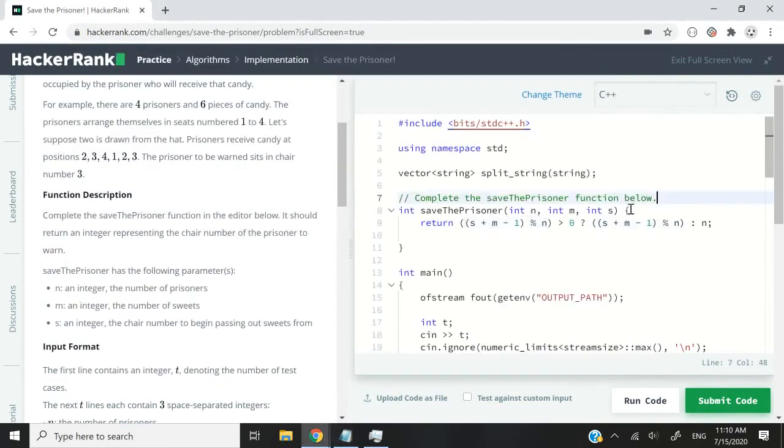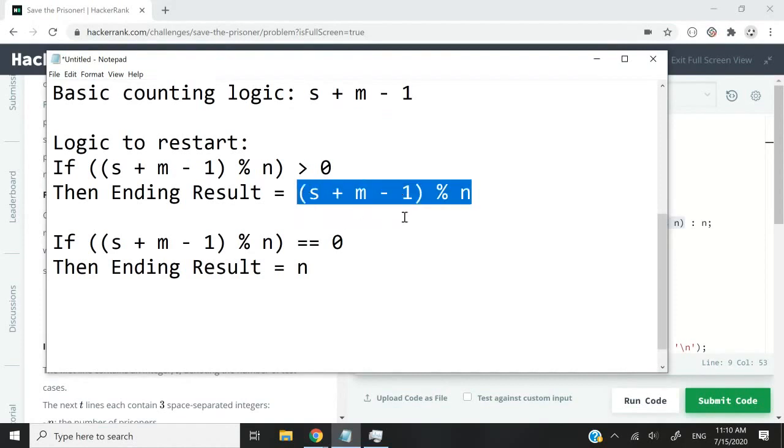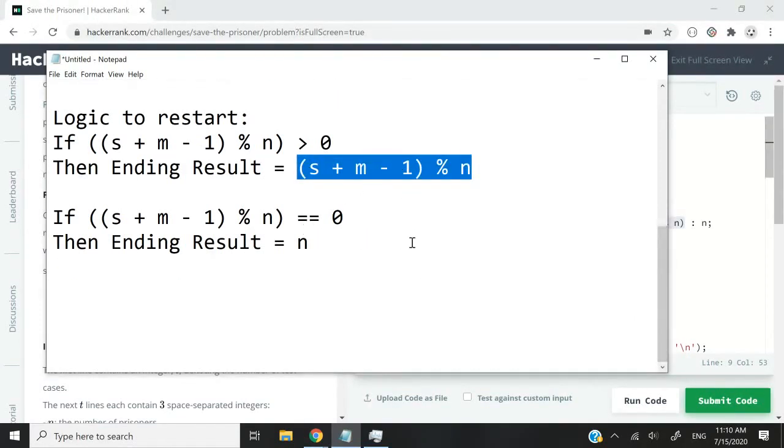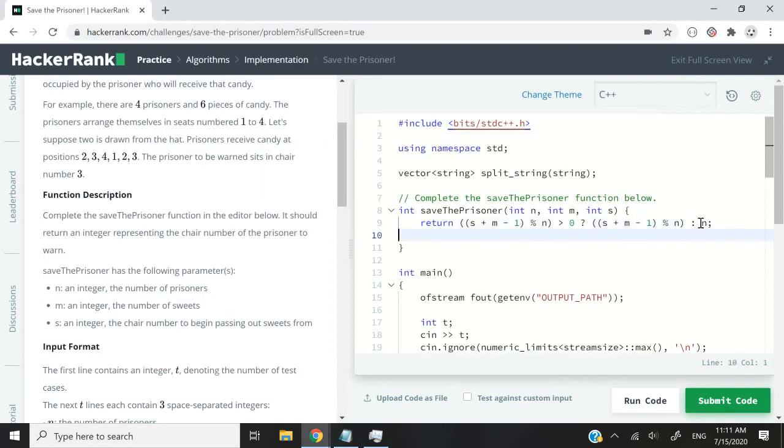I'm saying if this gives me a result greater than zero, so if this evaluates to true, then I return the result of that operation. That's what I want to return. And by the way, I need to remove the closing parenthesis here because it's incorrect. But basically, if this evaluates to true, then I return this. Otherwise, if this gives me a number divisible by n, this means the last position in my range is going to be the ending result, or ending position. And that's what we have here. Colon means if this evaluates to false, then we return n.